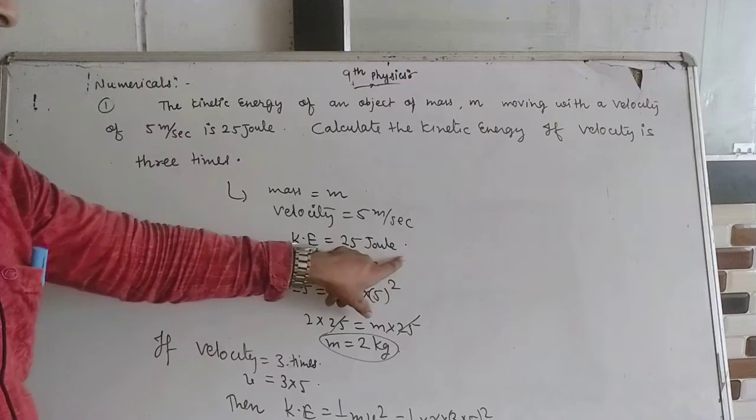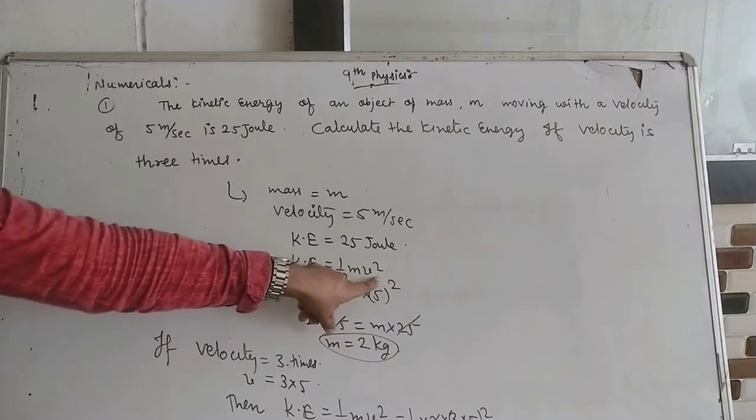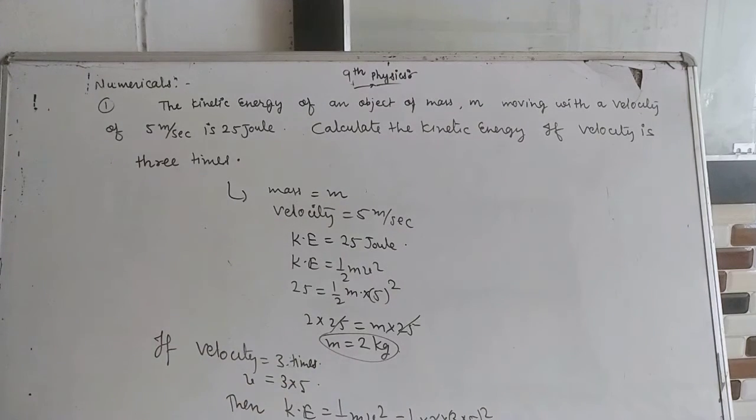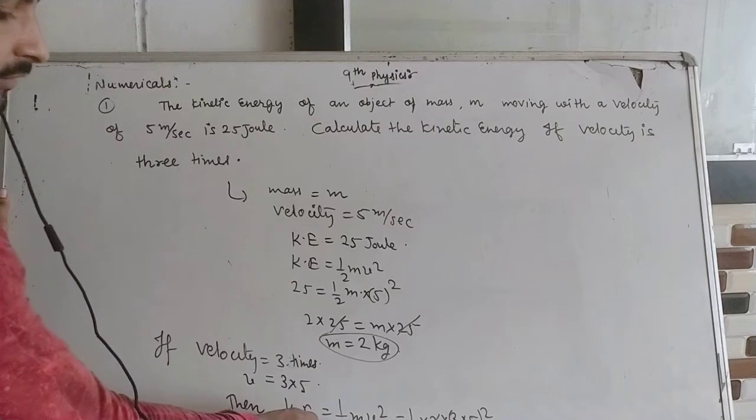First of all, kinetic energy equals half mv squared. You will calculate the value of mass because to calculate the new kinetic energy, you need the value of m.